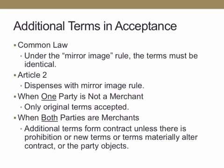Under the common law, there was the mirror image rule — any additional terms in acceptance would be a rejection. Under Article 2, it dispenses with the mirror image rule, and it depends on whether there's a merchant involved. If one of the parties is not a merchant, then only the original terms are accepted; the additional terms are not part of the agreement. If both parties are merchants, then additional terms do form a contract, unless they're prohibited, or the new terms materially alter the contract, or the parties object to the additional terms.